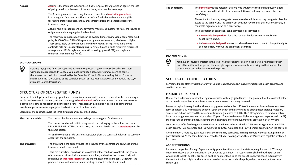The Assurus guarantee covers only the death benefits and maturity guarantees in a segregated fund contract. The assets of the funds themselves are not eligible for Assurus protection because they are segregated from the general assets of the insurance company. Assurus's role is to supplement any payments made by a liquidator to fulfill the insurance obligations under a segregated fund contract. The maximum compensation that can be awarded is $60,000 or 85% of the promised guaranteed amounts, whichever is higher. These limits apply both to amounts held in registered plans and to contracts held outside registered plans. Registered plans include registered retirement savings plans, registered education savings plans, and registered retirement income funds.